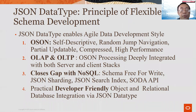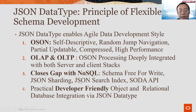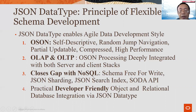In conclusion, JSON data type enables the principle of flexible schema development. OSON is self-descriptive, supports random jump navigation, partial updates, compression, and high performance. OSON processing has been deeply integrated with all Oracle client-server stacks. It closes the gap with NoSQL, supporting schema-free writes, JSON sharding, JSON search indexing, and the SODA API. It also supports JSON type to host what we call a practical, developer-friendly object-relational database using JSON data type, realizing the original Stonebraker vision of the object-relational database. Thank you for your attention.